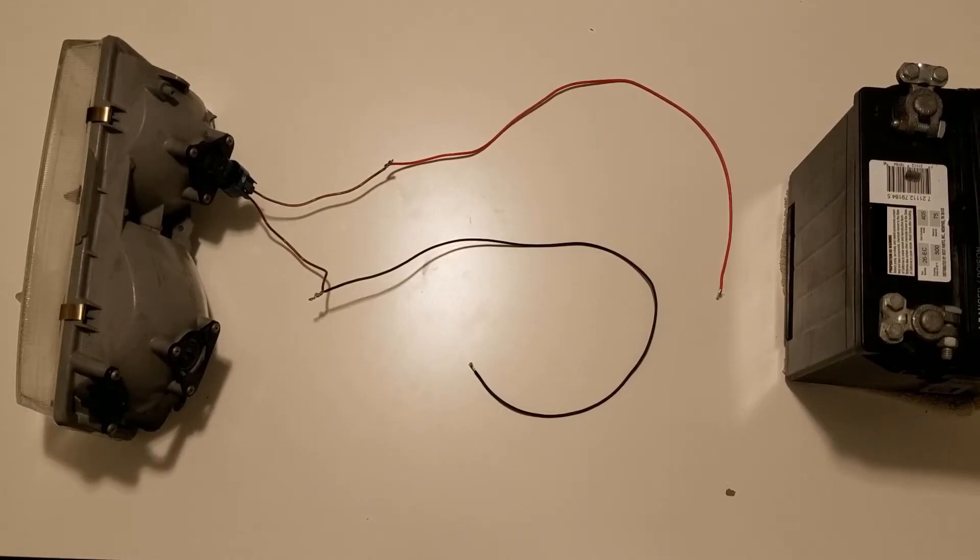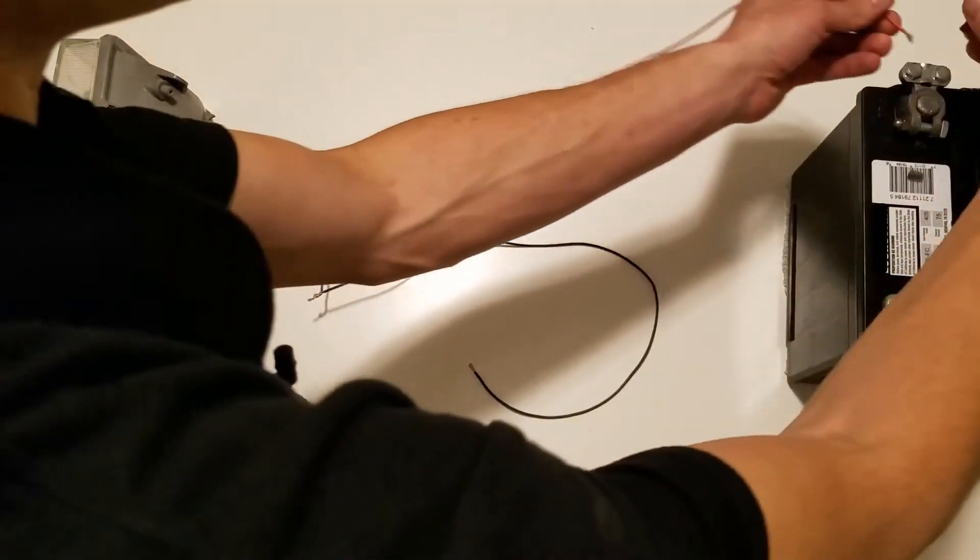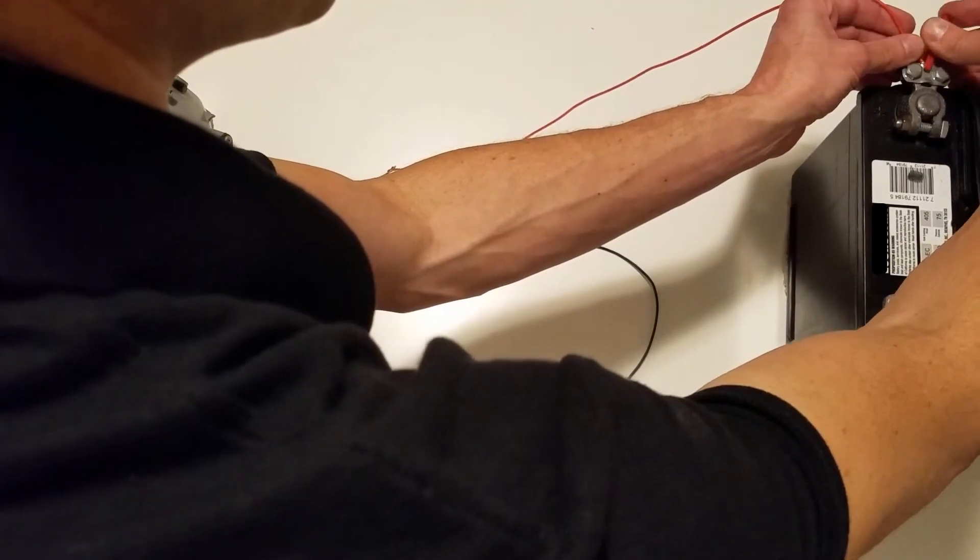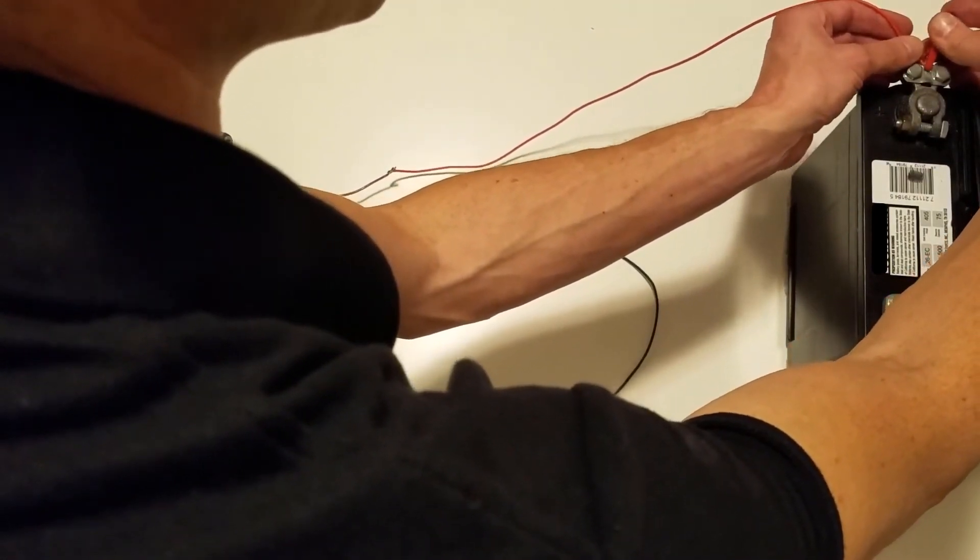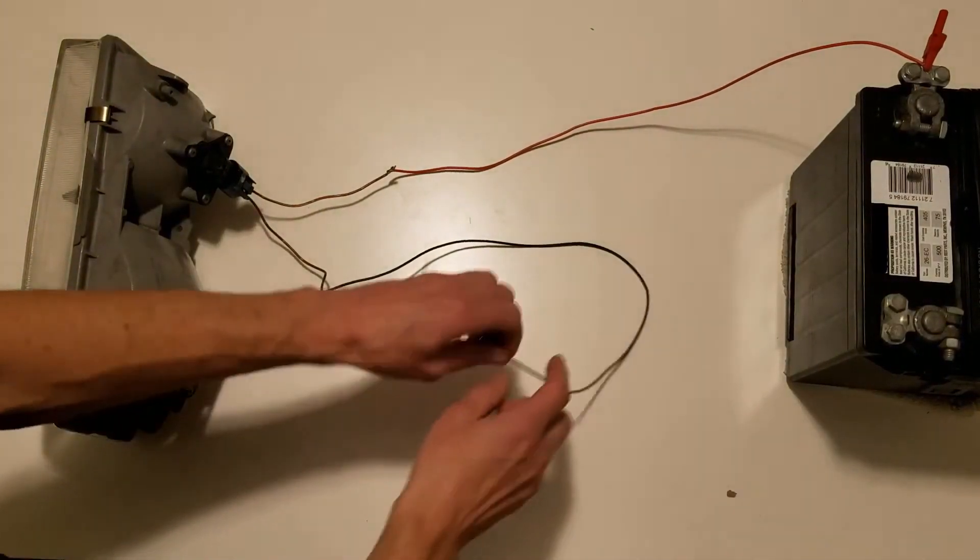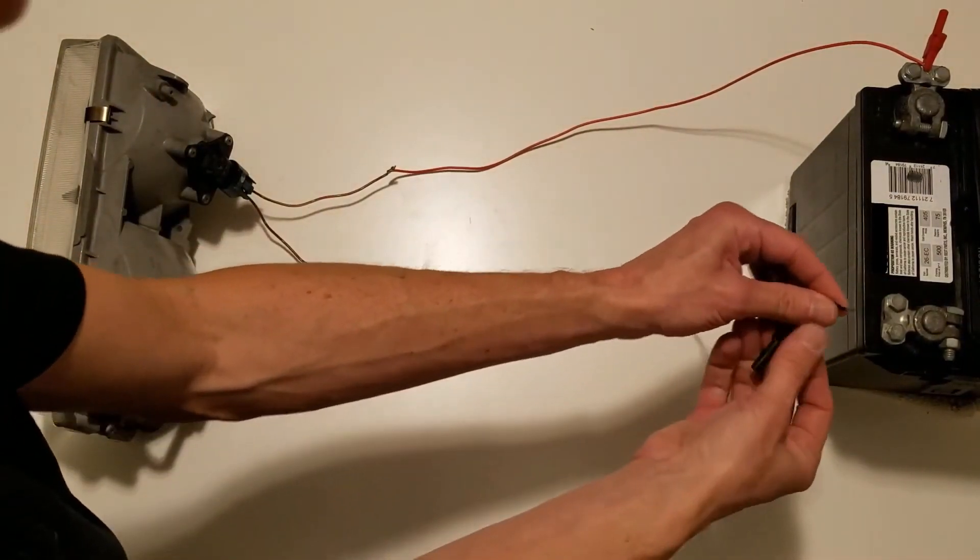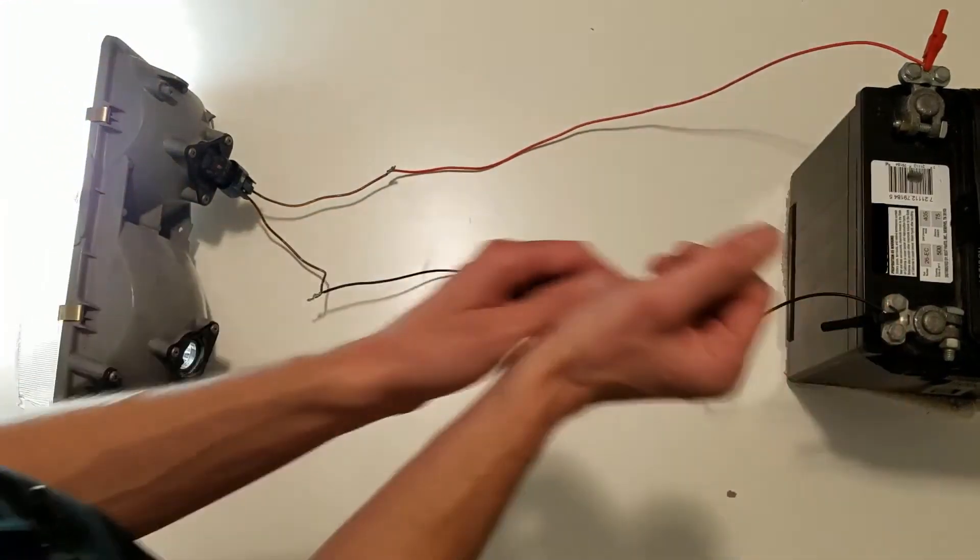I'm going to connect the positive side of the headlight first. Not the best way to do it, we're definitely getting some intermittent connections here just because it's not really meant for that, but it'll work for this demonstration. As soon as I connect the negative side, we'll see that the headlight comes on. We can see that our headlight is working.